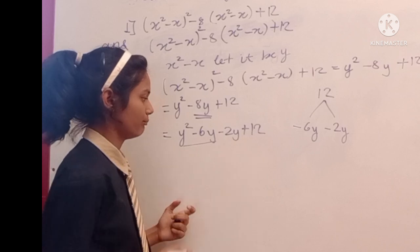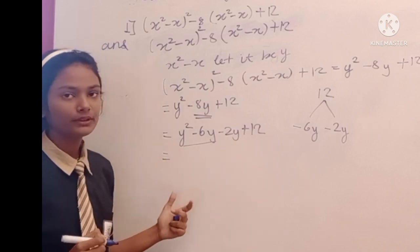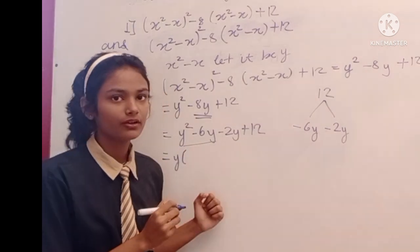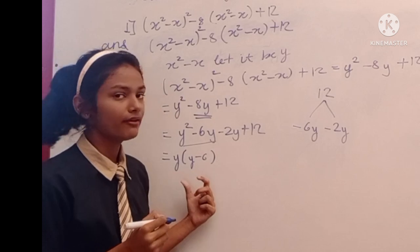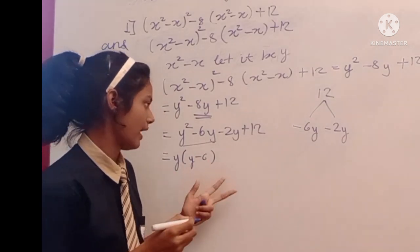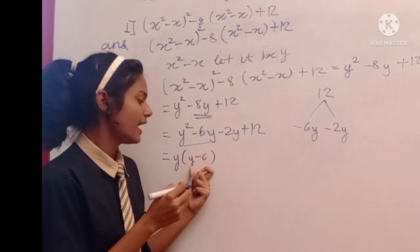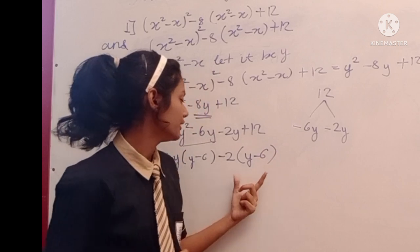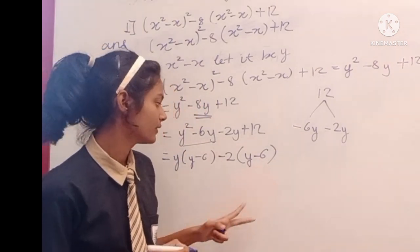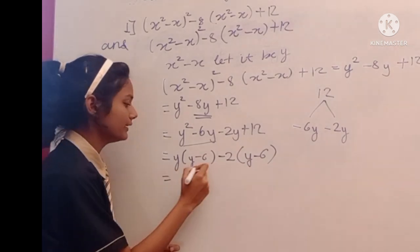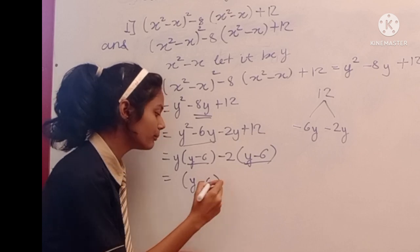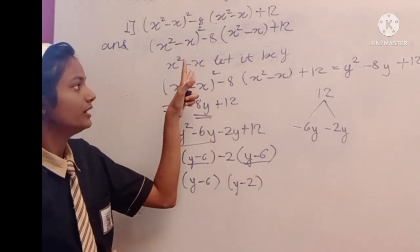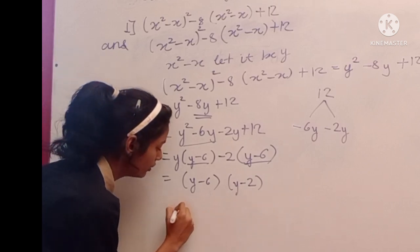Our new expression is y squared minus 6y minus 2y plus 12. We separate this into two pairs to find a simpler form. We take y outside the bracket to get y times (y minus 6), since y multiplied by the bracket gives y squared minus 6y. Then we take minus 2 outside, giving minus 2 times (y minus 6), which gives minus 2y plus 12. Now we take the common factor and substitute back.